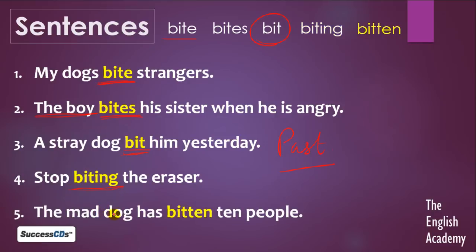Next sentence is: 'The mad dog has bitten ten people.' Is paagal kutte ne pehle bhi das logon ko kaata hai. Yahaan par hum past participle form use karenge — bitten.